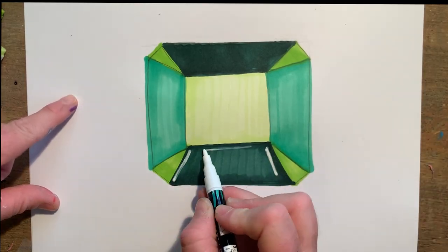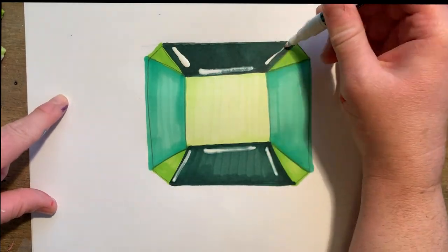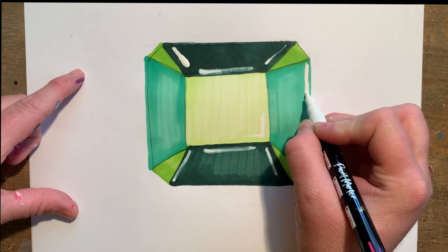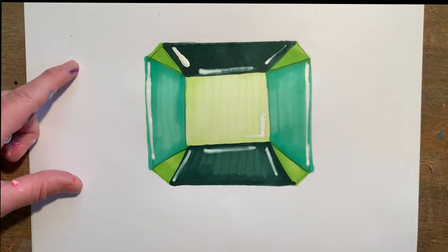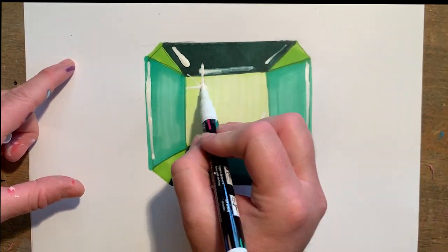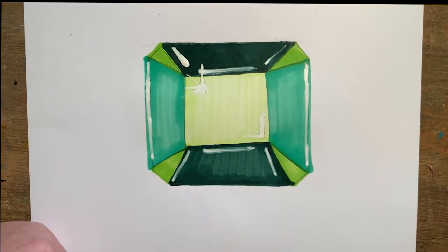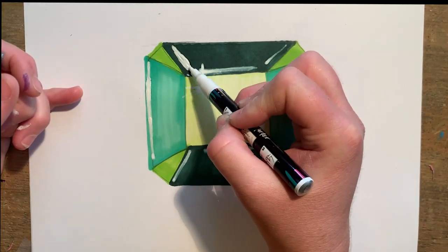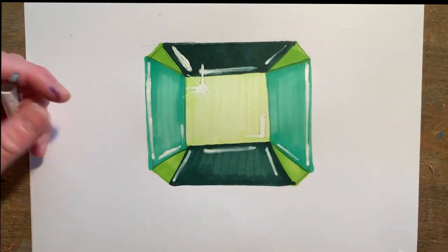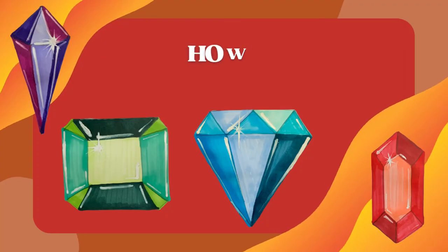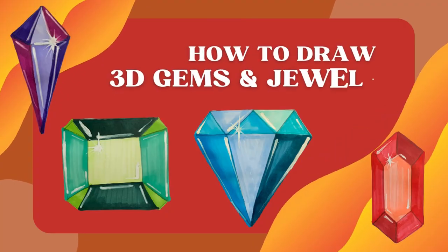And finally, using my white paint pen, I'm adding some highlights. And there we have our 3D gems and jewels.